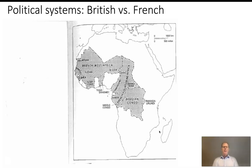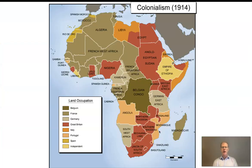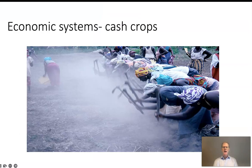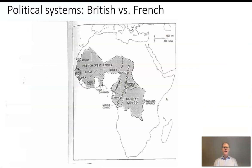Now let's shift to talk about political systems. There are major differences in how European powers approached setting up political systems in their new colonies. The British tended to treat each colony as an independent entity — Sierra Leone was ruled as one colony, Gold Coast as another, Nigeria as another, Uganda, British East Africa (also known as Kenya), and so on.